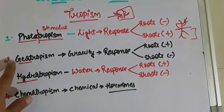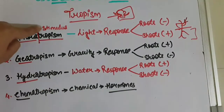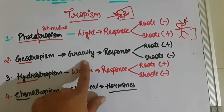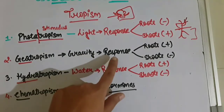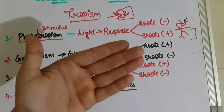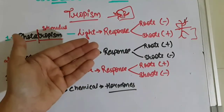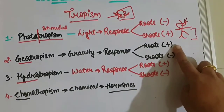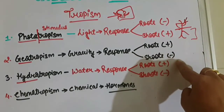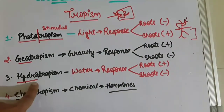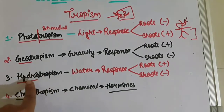The second type is geotropism. 'Geo' means gravity, so geotropism is the plant's response to gravity. Gravity always acts downward, and the roots grow downward, so roots show positive geotropism. The shoots grow upward, that is against gravity, so shoots show negative geotropism.